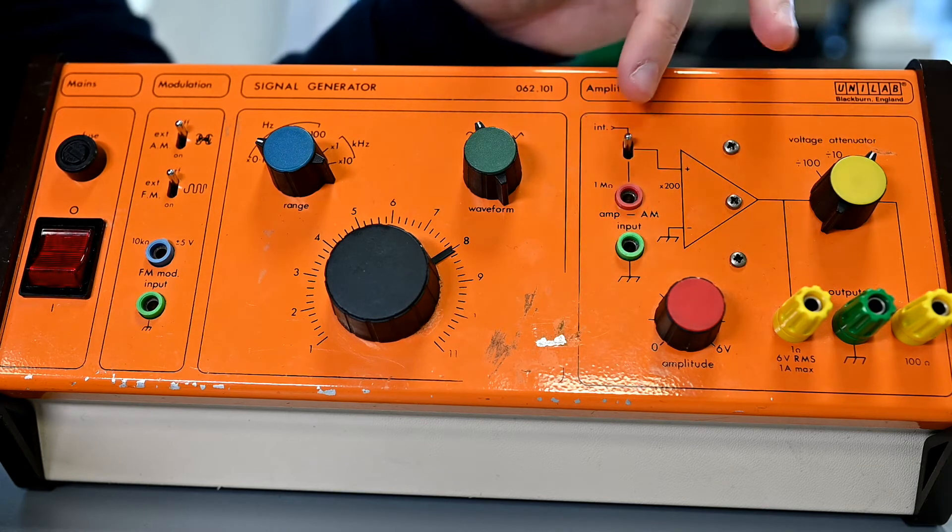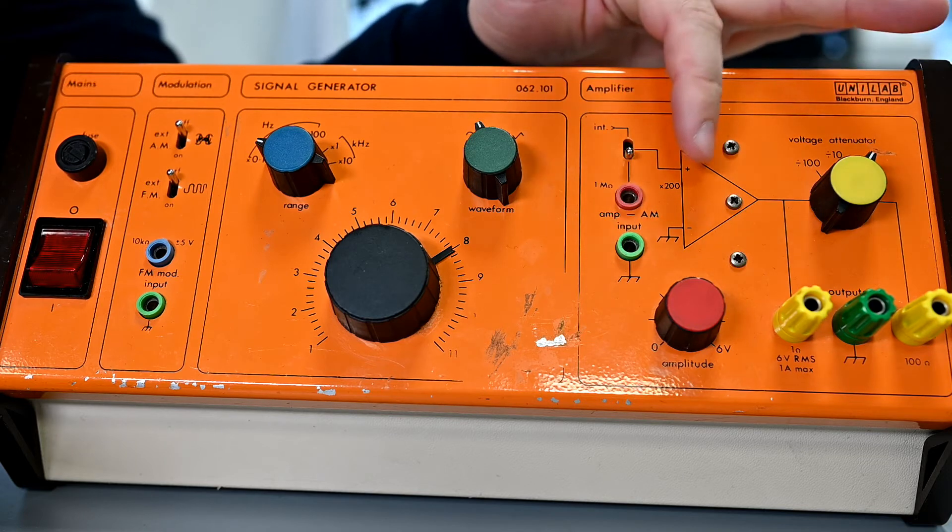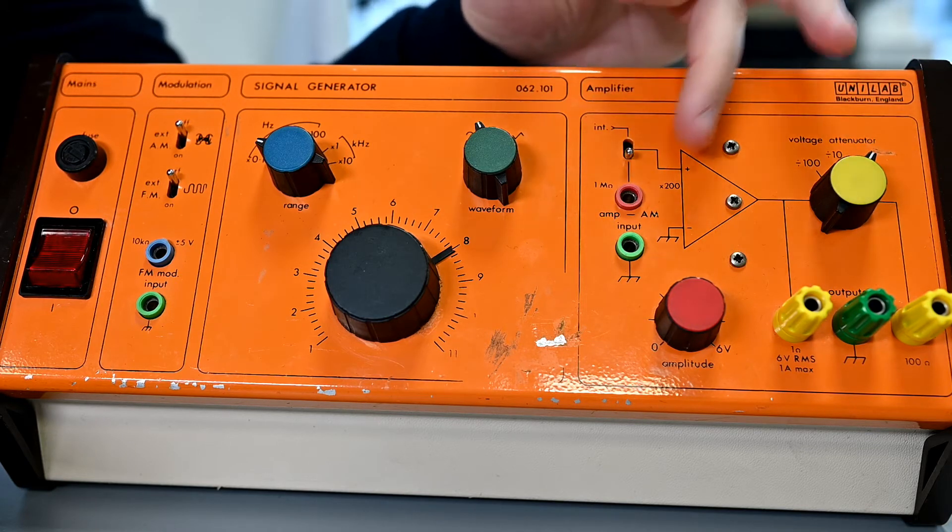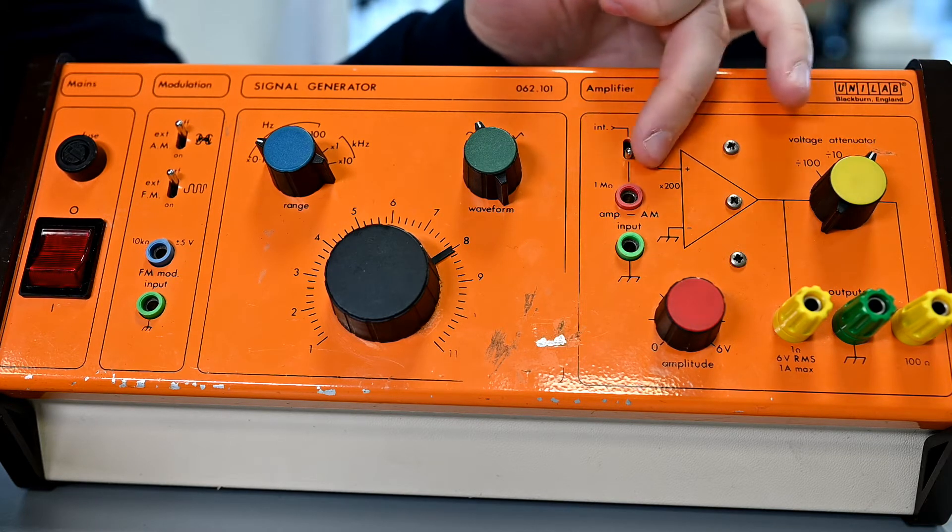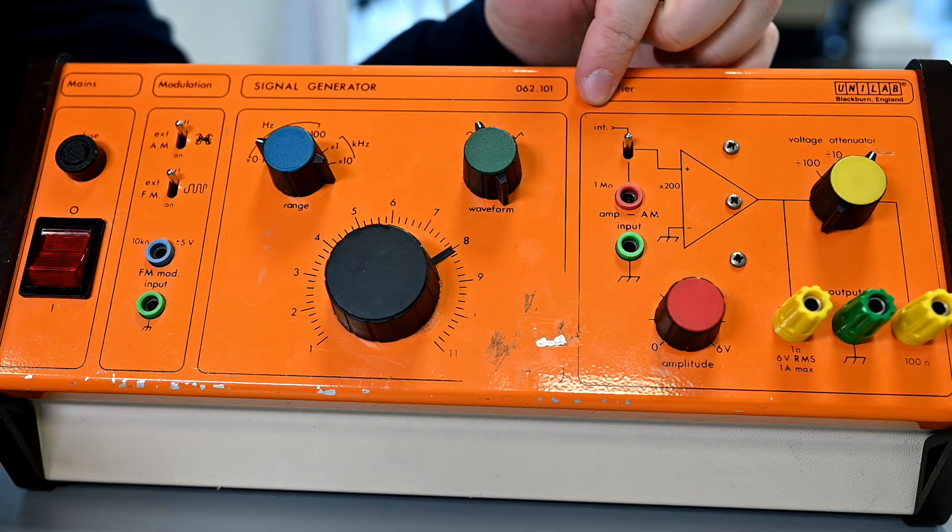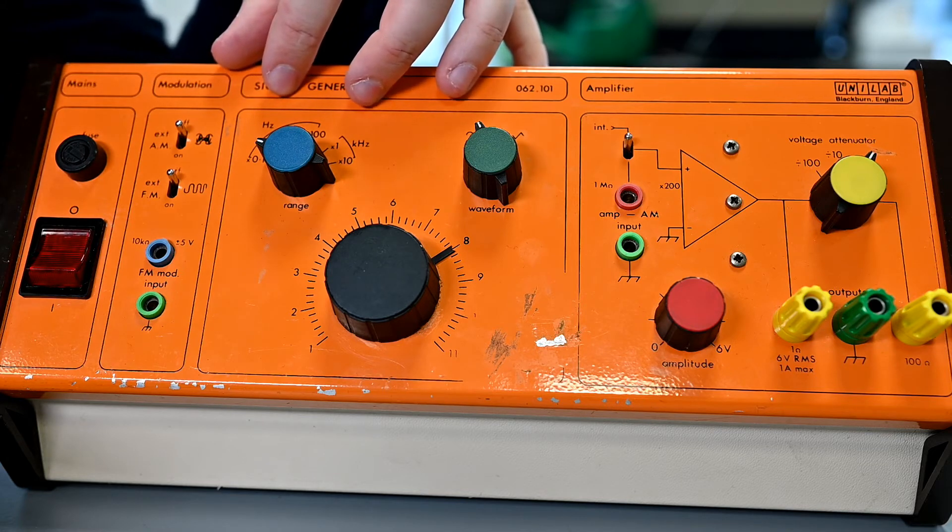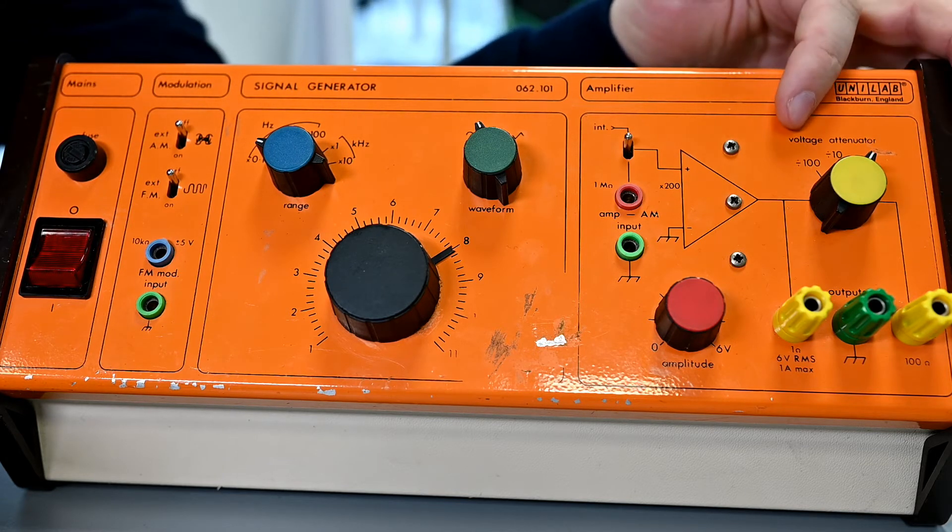I could flick that switch down and that would now amplify whatever was coming into these by 200 times. If I flick that switch to INT, that means internal. That means it's now going to output the frequency that I've selected here. There's a voltage attenuator here.